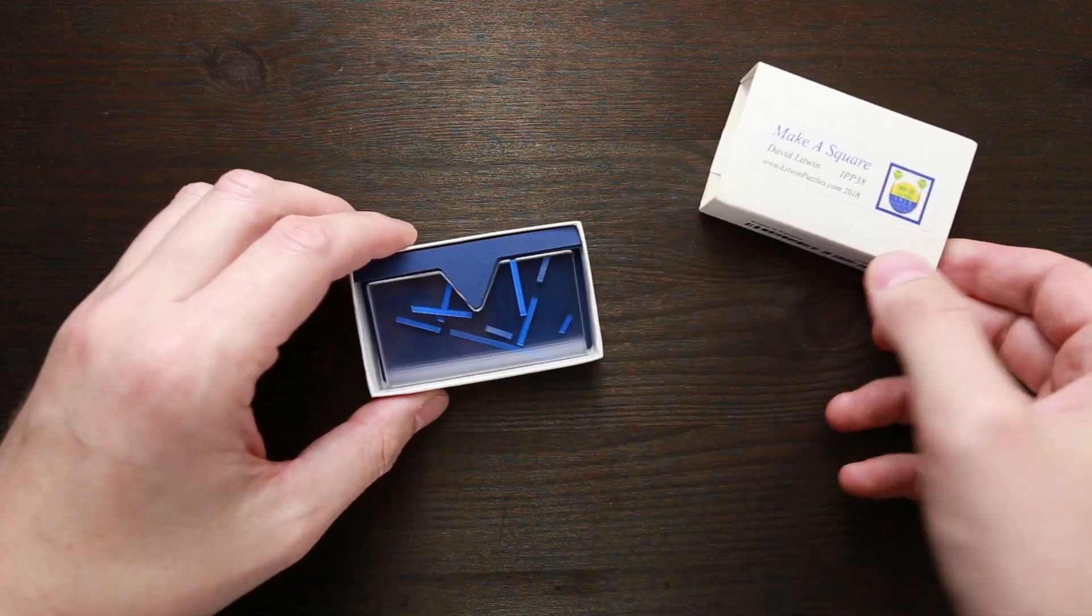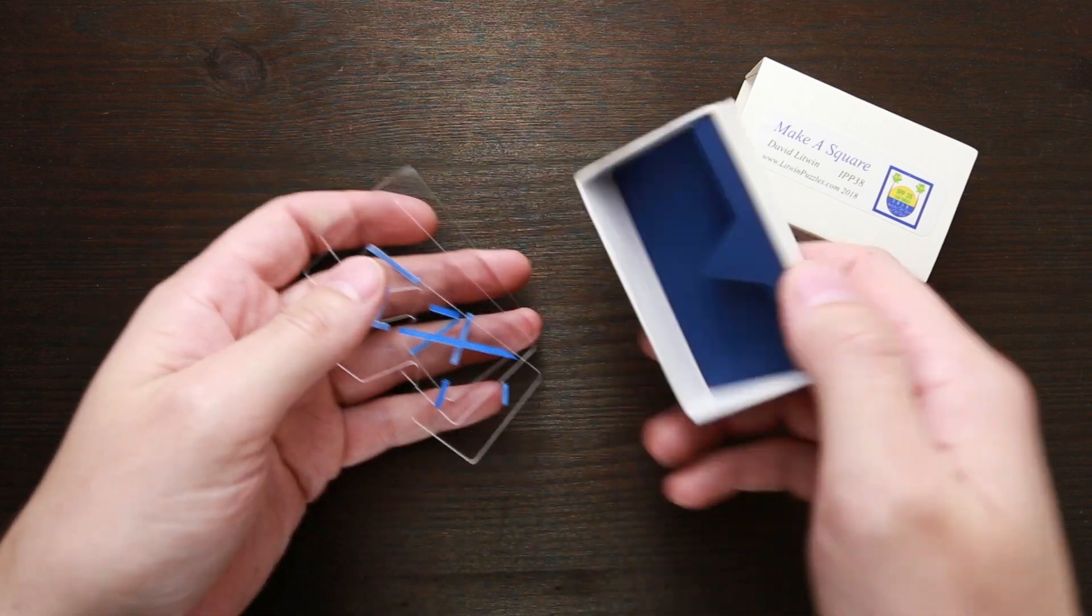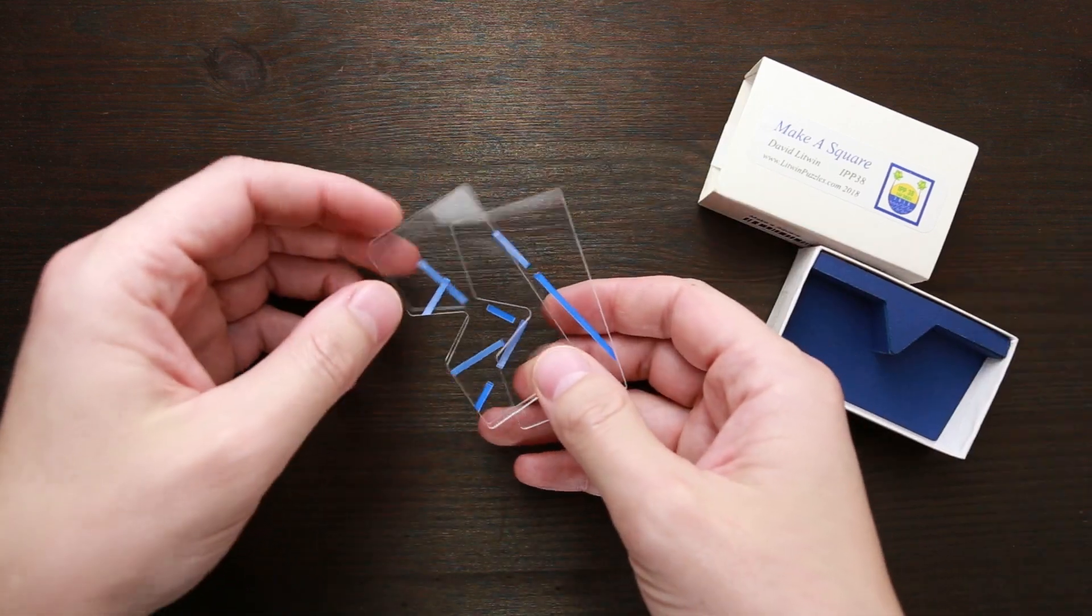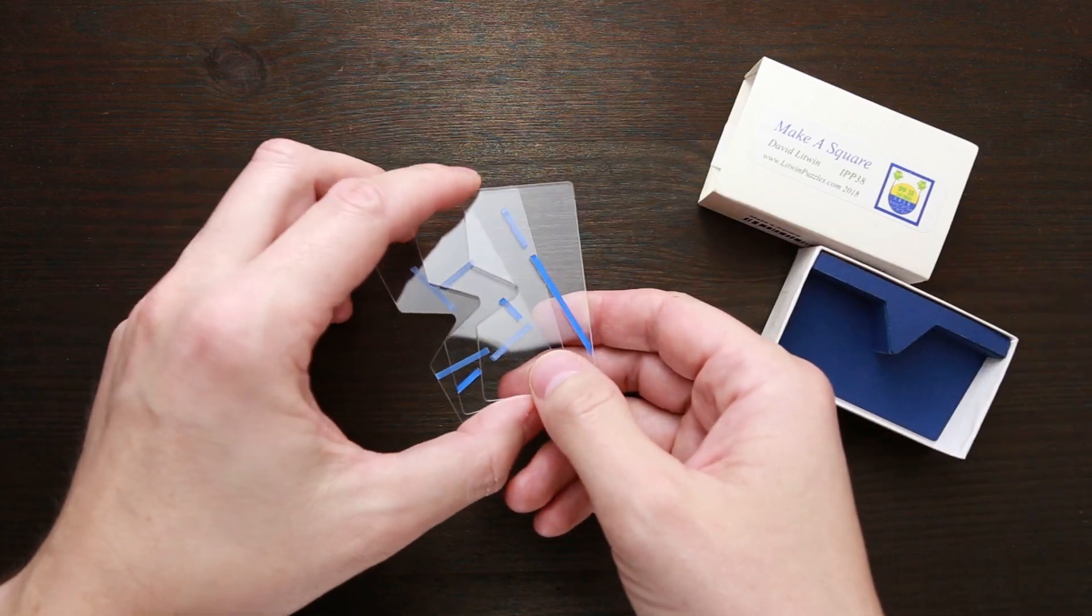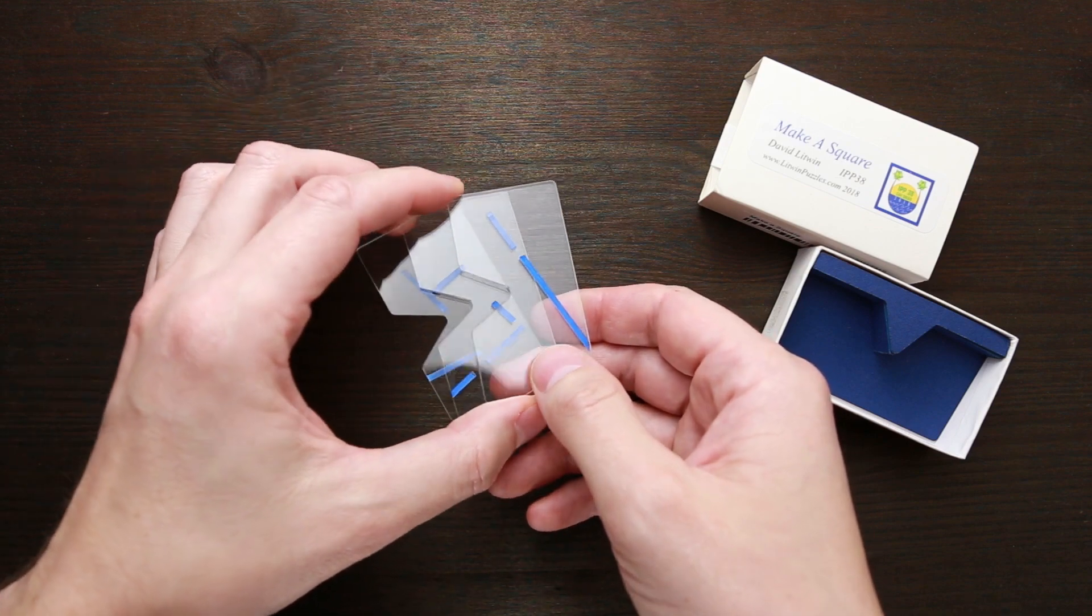It's a Make a Square puzzle. It was created by David Litwin and he used it as his exchange puzzle for the IPP 38, which was held in San Diego in 2018.